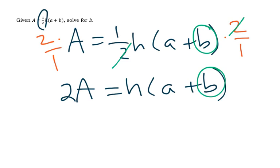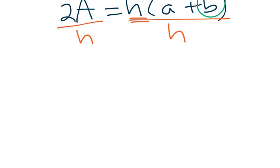The next thing I notice is I still have this h here that I want to get rid of. So what I'm going to do is divide by h on both sides. If I do that, I'm left with 2A/h on this side. Notice the h's cancel, and then I have a + b.